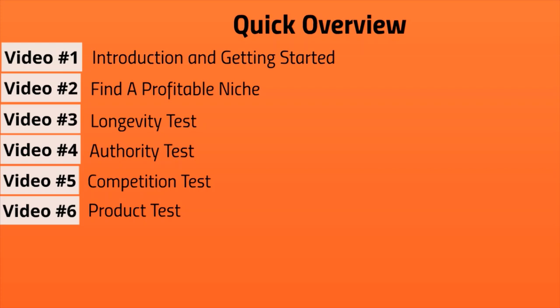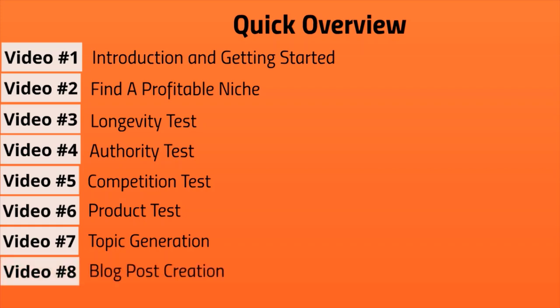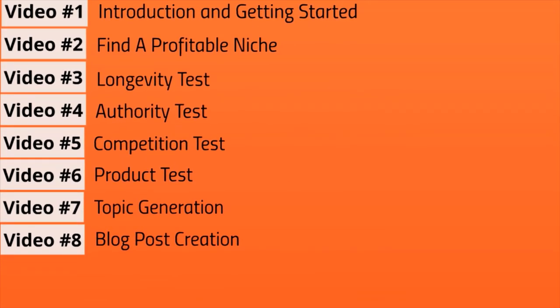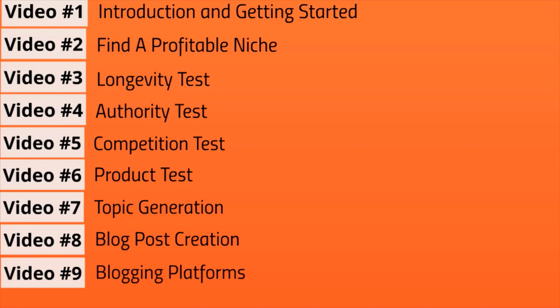Video six covers the product test to make sure everything will be profitable in the long run, because the worst case is jumping into a niche with high demand that isn't profitable. Video seven is topic generation — I'll show you how to use free tools to gather intelligence on what topics are actually in demand. Video eight is blog post creation. Video nine covers blogging platforms. Notice that videos one through eight are all about strategy and planning before you even set up your blog or think about software tools.